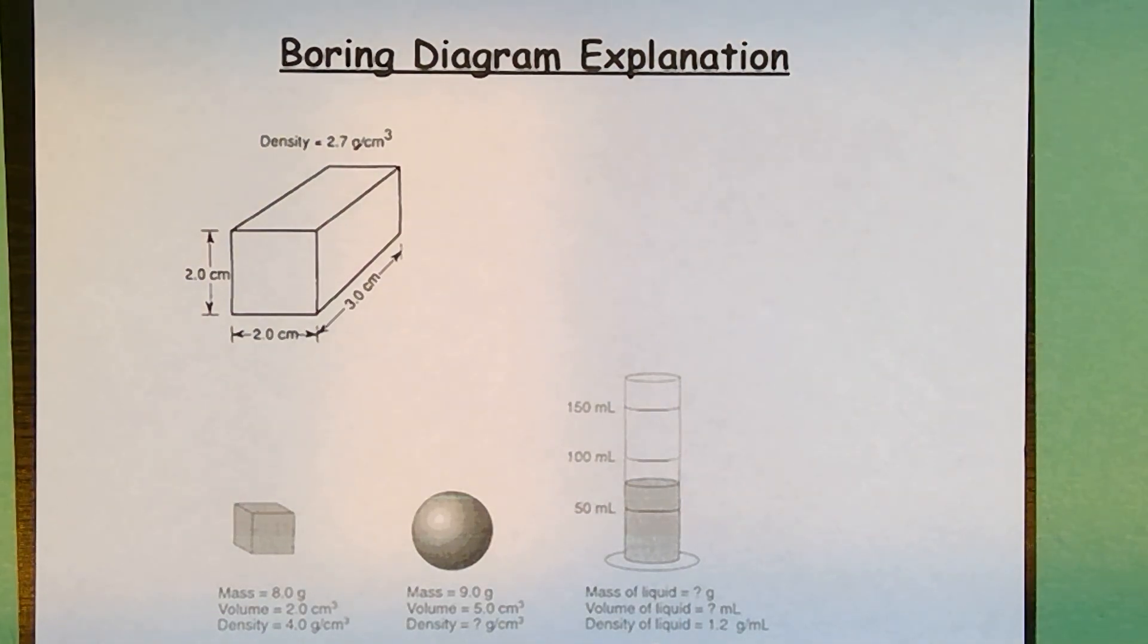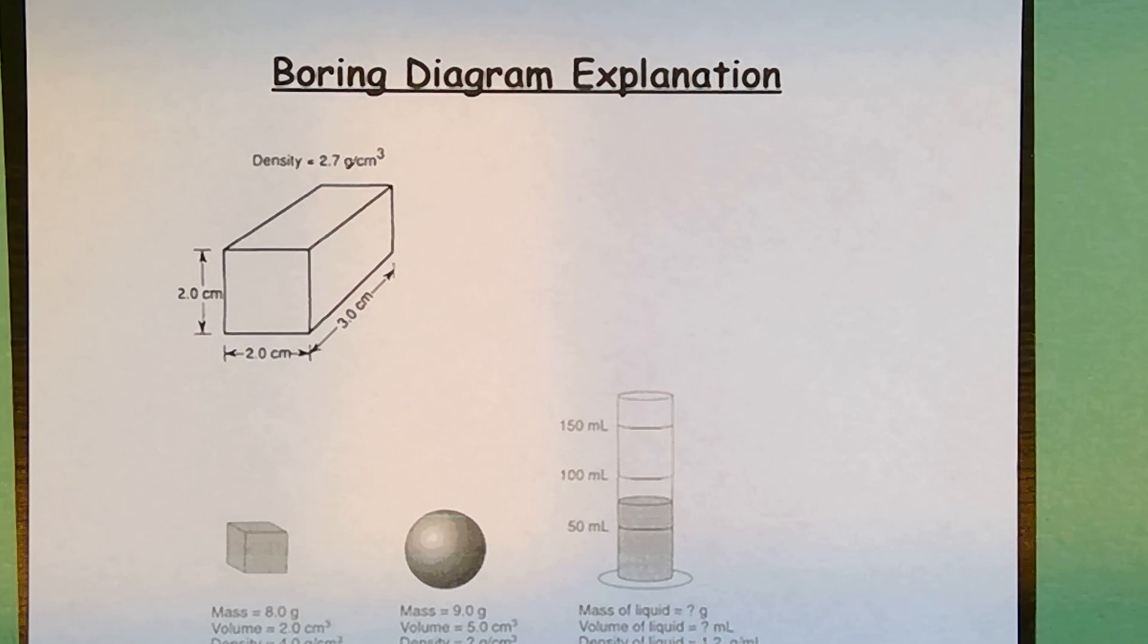Mr. Abbott here and it's time for a boring diagram explanation. This one is number 34 and it is on density. So when you look at this, both of these groups came from Regents questions.